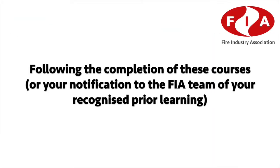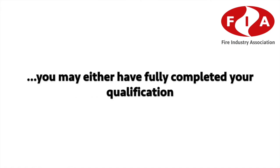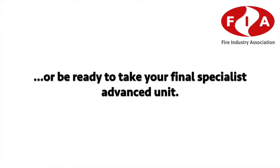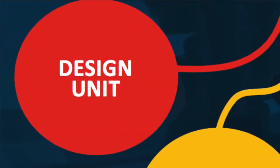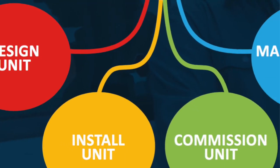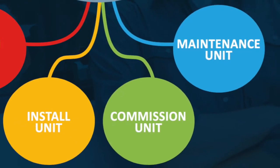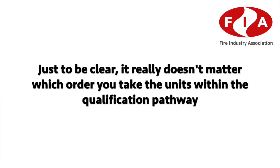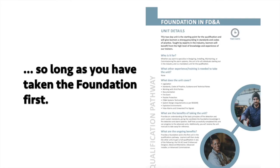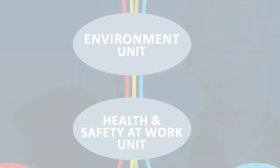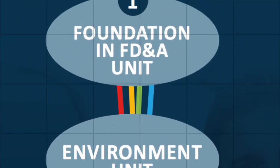Following the completion of these courses, or your notification to the FIA team of your recognised prior learning, you may either have fully completed your qualification or be ready to take your final specialist advanced unit. This could be in either design, installation, maintenance, or commissioning. It really doesn't matter which order you take the units within the qualification pathway, so long as you've taken the foundation unit first.